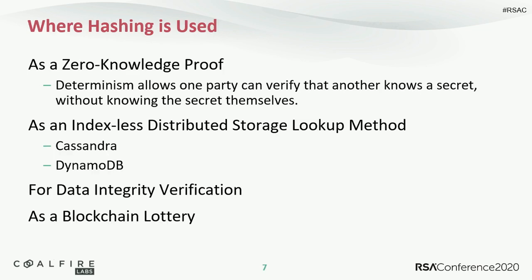So where do these get used? If you're a CISSP, you'll know what a zero-knowledge proof is. The determinism of a hashing algorithm lets us verify that somebody else knows what a secret is without us knowing what the secret is. It allows us to verify that a user knows their own password without us knowing what their password is. It's really useful.